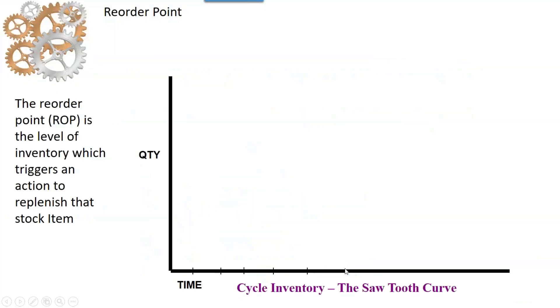Looking at this graph, we can see that you consume product over time, in this case five periods, and then the logic is that you replenish inventory with an order quantity and repeat the cycle.